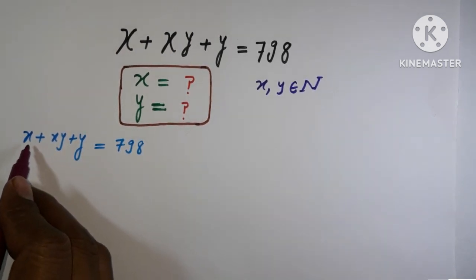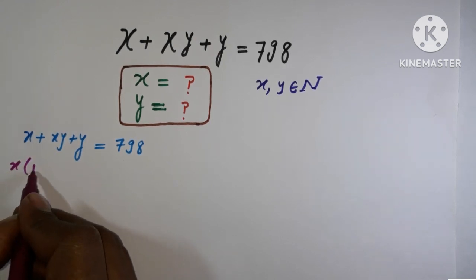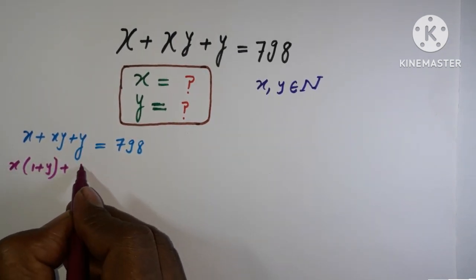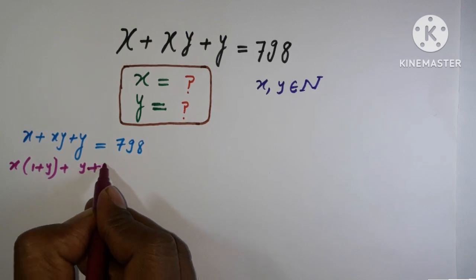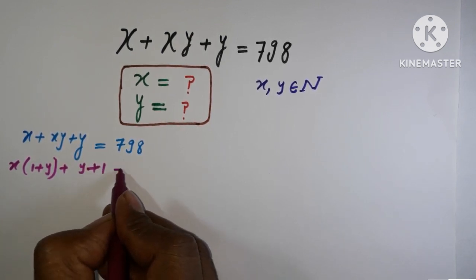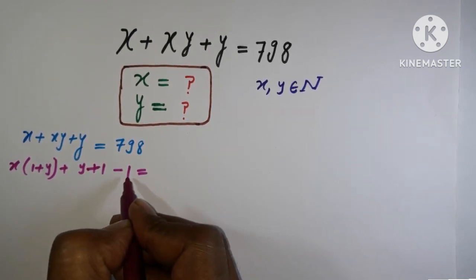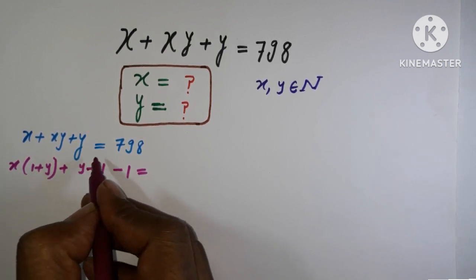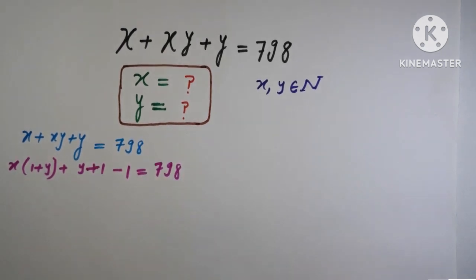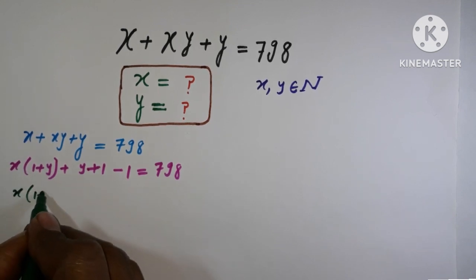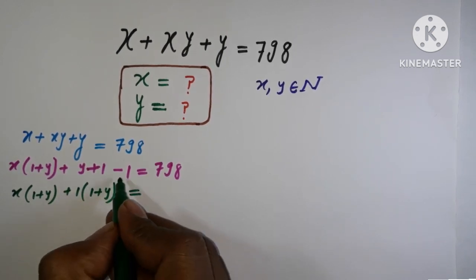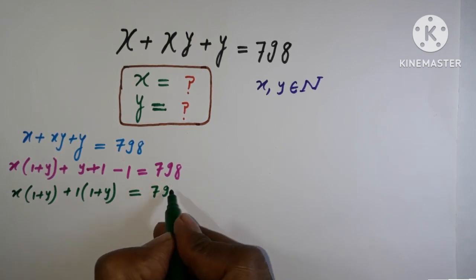If I take x common, I have x times (1 plus y). For the remaining y term, I write y plus one, and to keep the equation balanced I add and subtract one — so I place a plus one and a minus one. This way the equation is unchanged and we can factorize it as x(1 plus y) plus (1 plus y) minus 1.